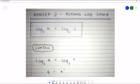Seterusnya, konsep yang kedua adalah memotong log yang sama. Contoh: log B asas A sama dengan log C asas A. Sebelah kiri dan sebelah kanan mempunyai log asas yang sama, jadi kita boleh potong kedua-dua log di belah kiri dan belah kanan.